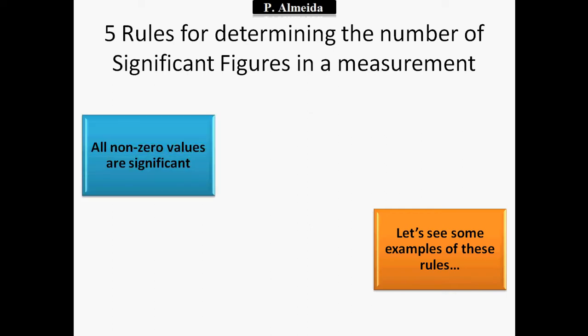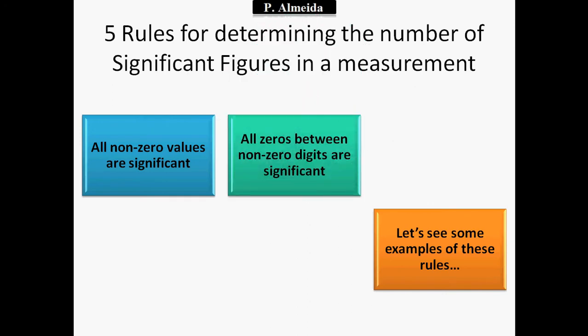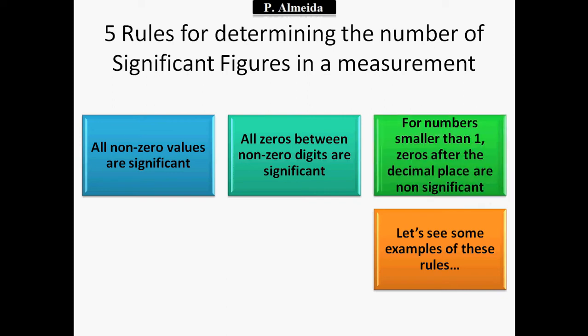Rule number one: all non-zero values are significant, so they are counted as significant figures. Rule number two: all zeros between non-zero digits are significant, so if you have a zero, it will be a significant figure if it is between non-zero digits. Rule number three: for numbers smaller than one, zeros after the decimal place are non-significant.